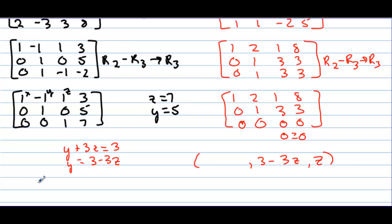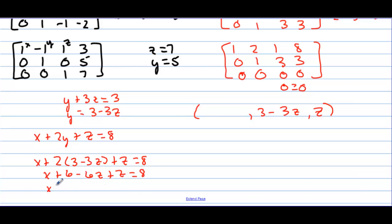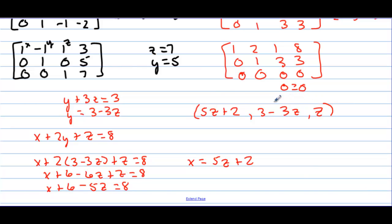At the top, x + 2y + z = 8. Substituting y = 3 − 3z: x + 2(3 − 3z) + z = 8, so x + 6 − 6z + z = 8, x + 6 − 5z = 8, x = 5z + 2. So once you pick z, y = 3 − 3z and x = 5z + 2. There are infinitely many solutions, but they must follow these specific relationships.